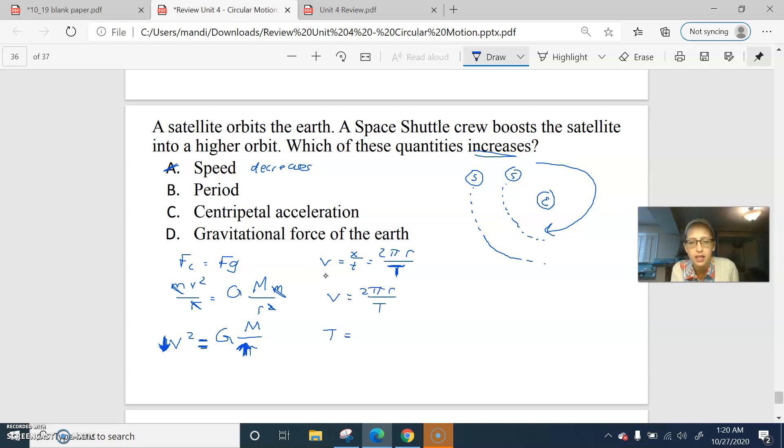If we swap those around, T equals 2πr over v. We increased radius but decreased velocity. Increasing radius would increase the time period. Decreasing velocity would also increase the time period. I'm thinking time period increases.